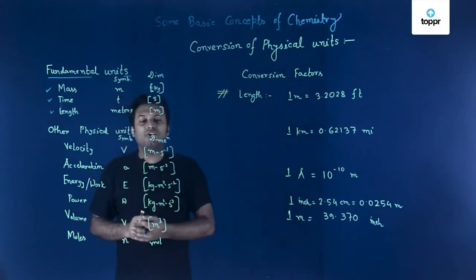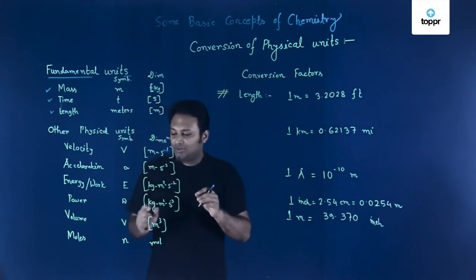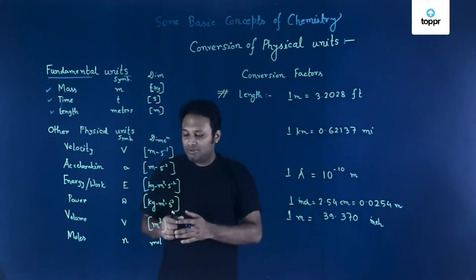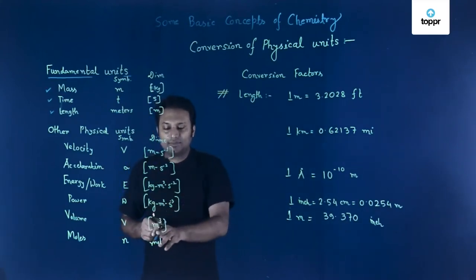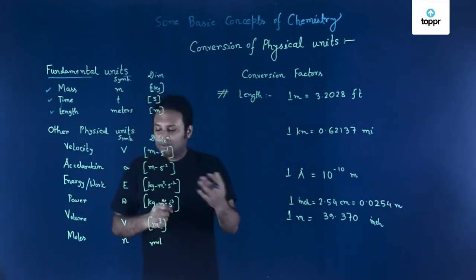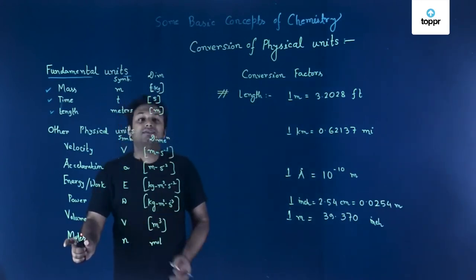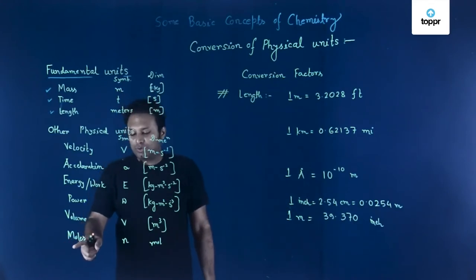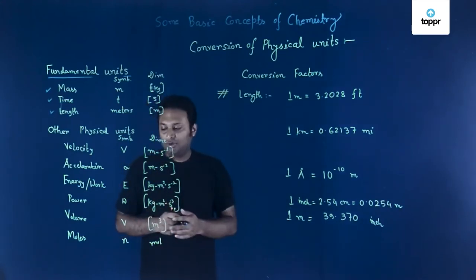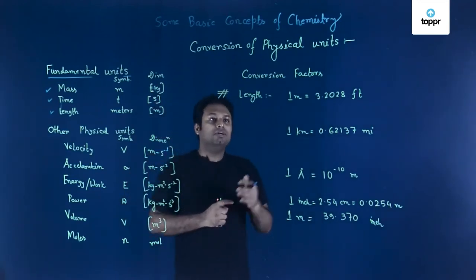Then volume — volume is how much space a substance is occupying. It is denoted by V and the dimension is meter cube (in SI units; in CGS it will be centimeter cube). Next is moles, denoted by n and expressed as mol. We will discuss some of these one by one and try to solve some problems.